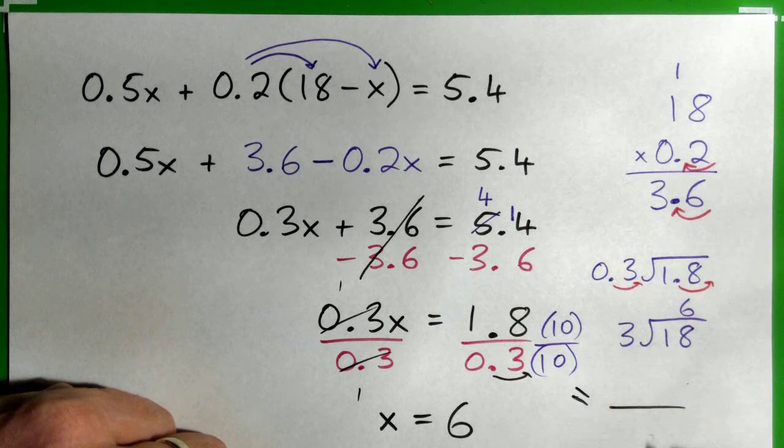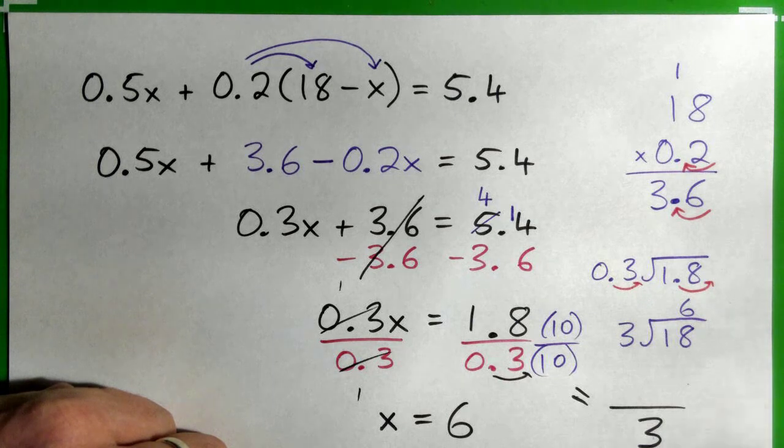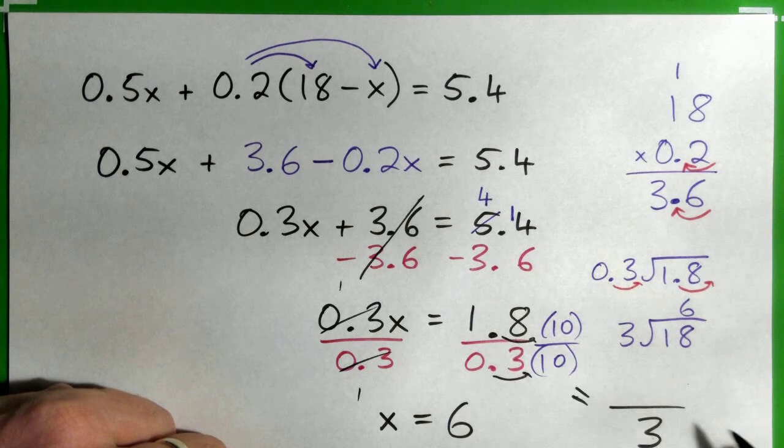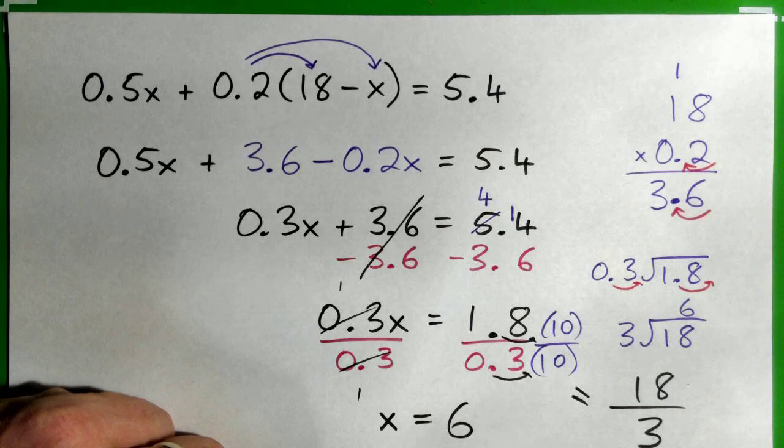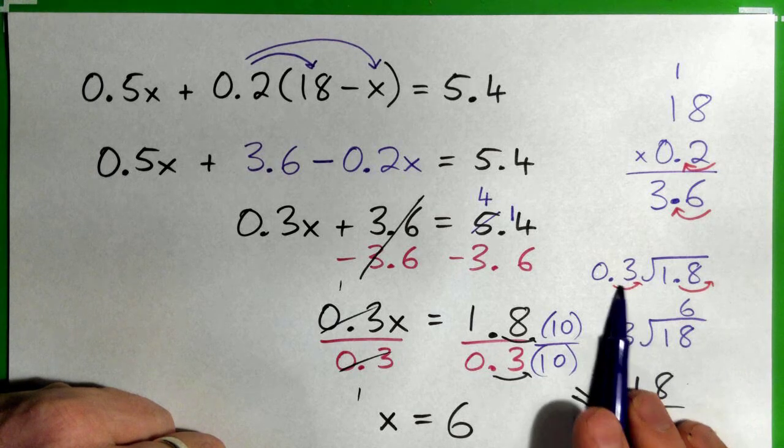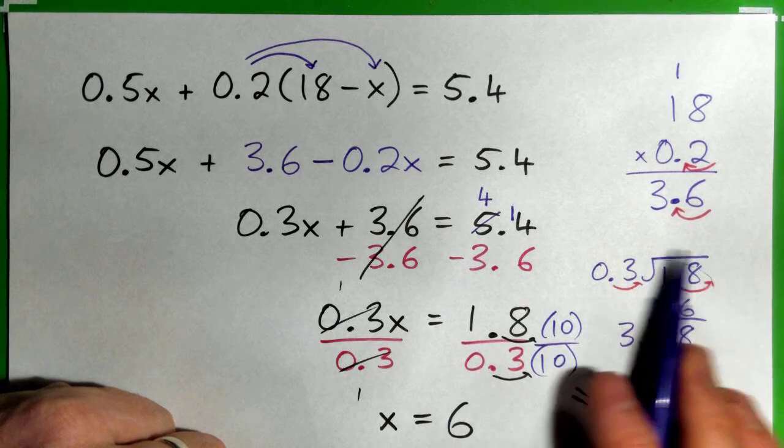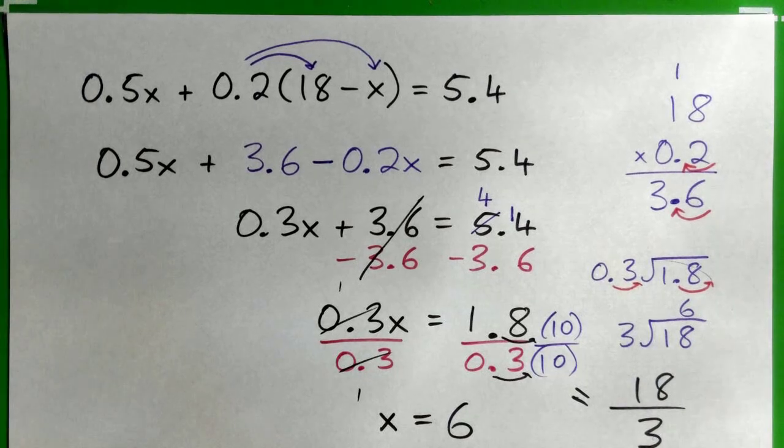And then 1.8 times 10, again, that moves that decimal point one spot to the right and that becomes 18. So 18 over 3, which is 6, that's another way of doing it. But that's essentially what we do when we're doing our division, long division here, right? So that's the answer. X equals 6.